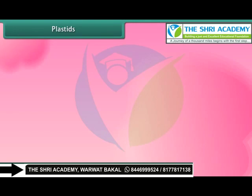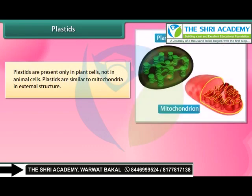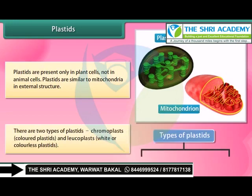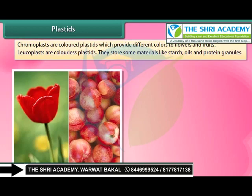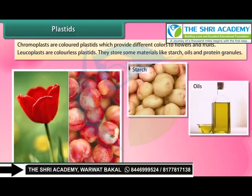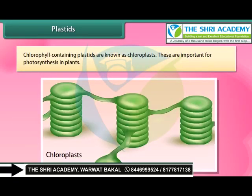Plastids are present only in plant cells, not in animal cells. Plastids are similar to mitochondria in external structure. There are two types of plastids: chromoplasts, which are colored plastids, and leucoplasts, which are white or colorless plastids. Chromoplasts provide different colors to flowers and fruits. Leucoplasts are colorless plastids that store materials like starch, oils, and protein granules. Plastids containing chlorophyll are known as chloroplasts, and these are important for photosynthesis in plants.